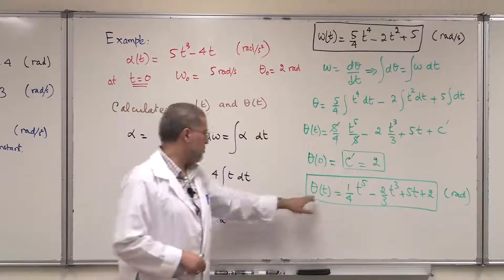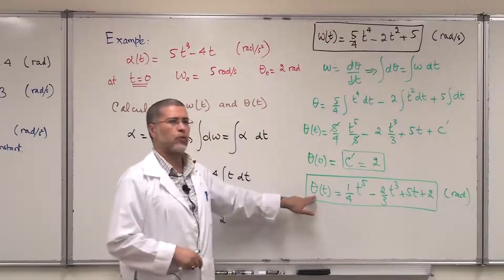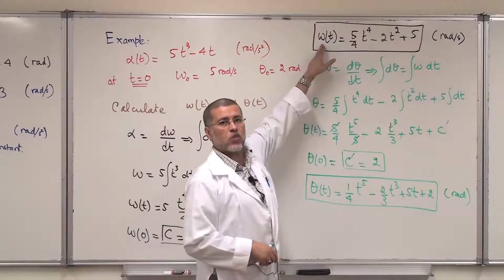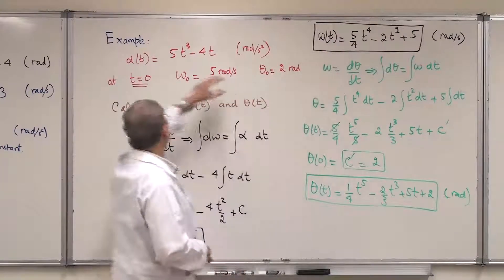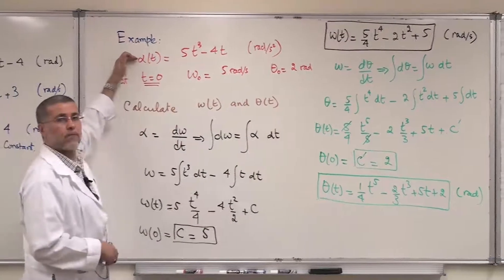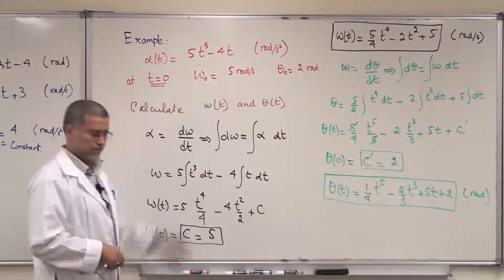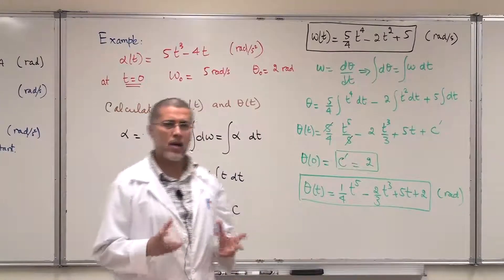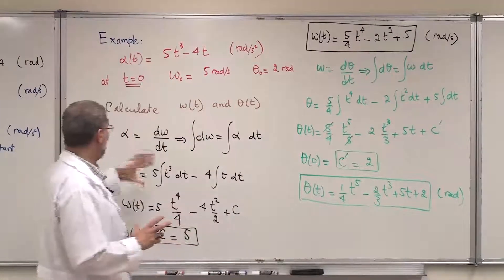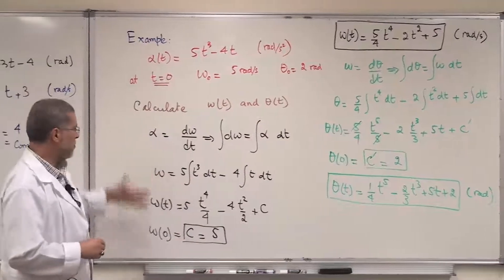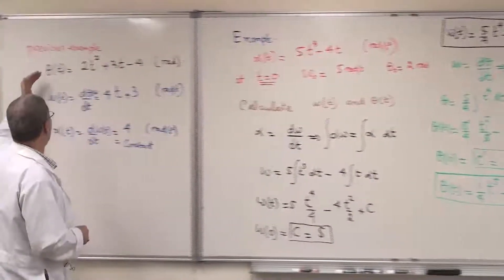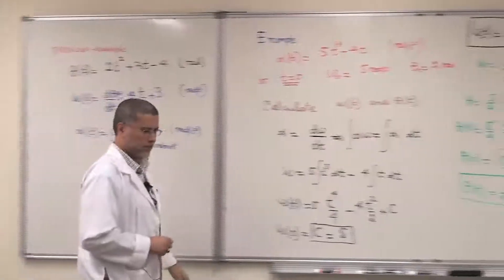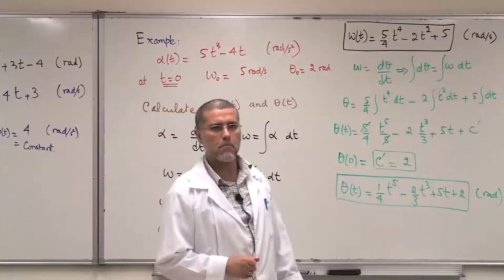This shows the variation of angular position as a function of time, how angular velocity changes with time, and how angular acceleration changes with time. This is an interesting example where you integrate to find the variables, compared to the previous example where you differentiate to find the variables.